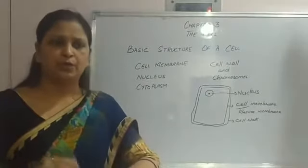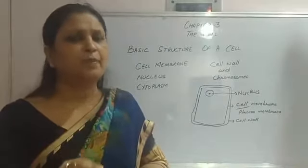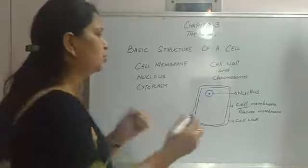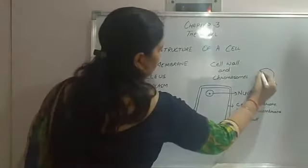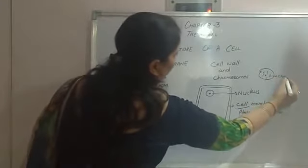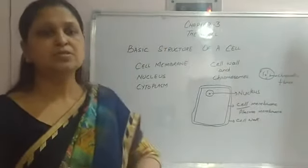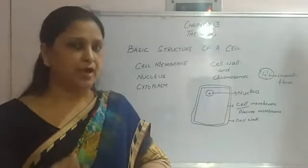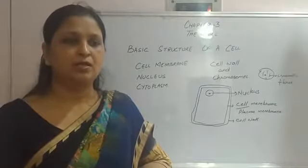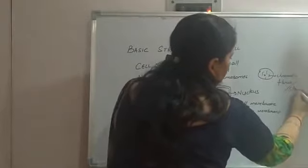In the nucleus, many thin fibers are present, which are known as chromatin fibers. These chromatin fibers, when the cell is divided or when the nucleus is divided, become thick and are known as chromosomes.